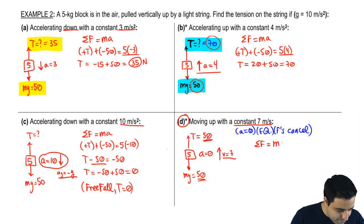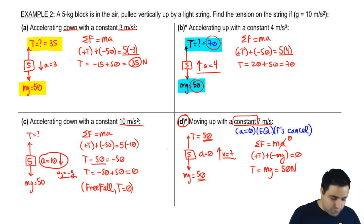So it's kind of tricky, but the forces have to be the same. Sum of all forces equals ma. The acceleration is simply zero. I know this because it's a constant velocity. So plus t plus negative mg equals zero. T has to equal mg, and it's just 50 newtons. Because this problem is at equilibrium.